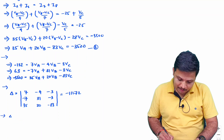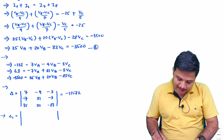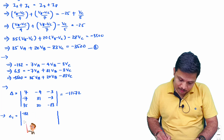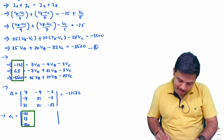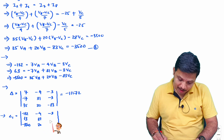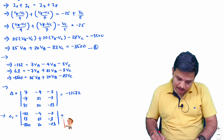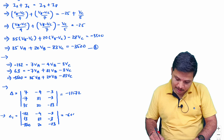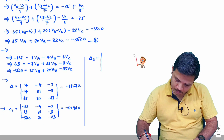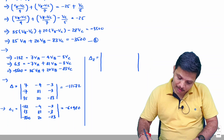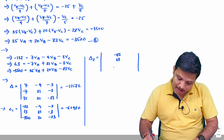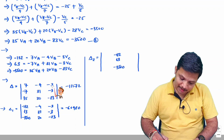For delta 1, we replace the first column with the constants: minus 132, 63, minus 3500, keeping other columns as minus 4, 31, 20 and minus 3, minus 3, minus 83. Solving gives delta 1 equals minus 60480. For delta 2, the constants minus 132, 63, minus 3500 go in the middle column, with first column 7, minus 7, 35 and last column minus 3, minus 3, minus 83.